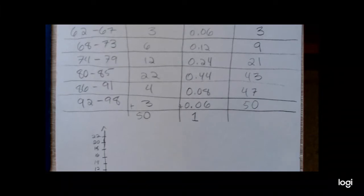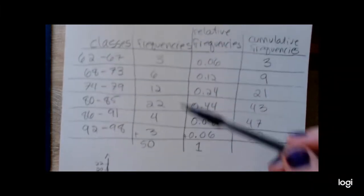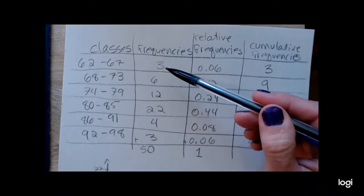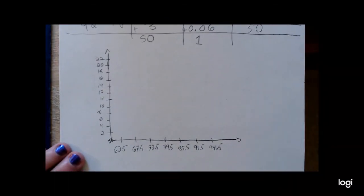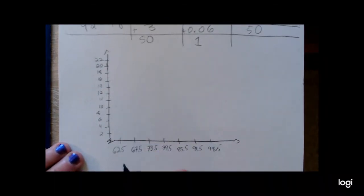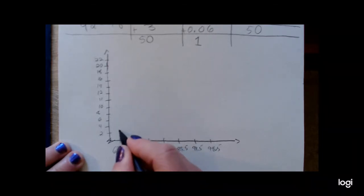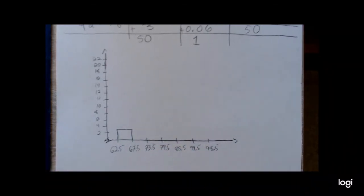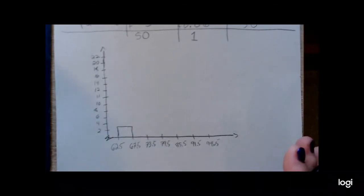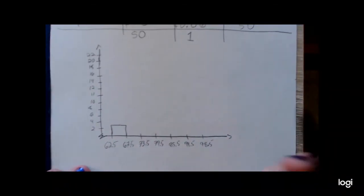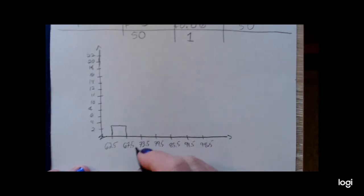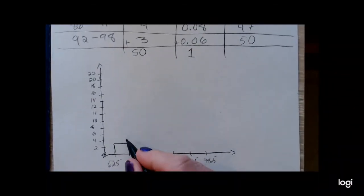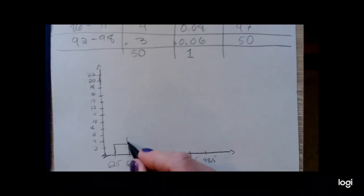Okay, so I want to make the height of the bars the number of frequencies. So for this first class, the frequency is 3. So I'm going to make the first bar 3 units tall. Again, trying to be as neat as possible. Usually my histograms kind of slant, lean to the right. Leaning tower of histogram. My next class had a frequency of 6, so the bar needs to be a height of 6.